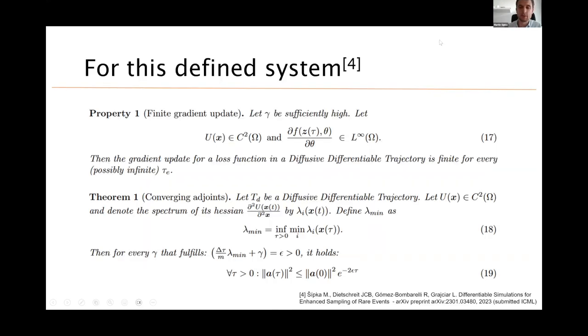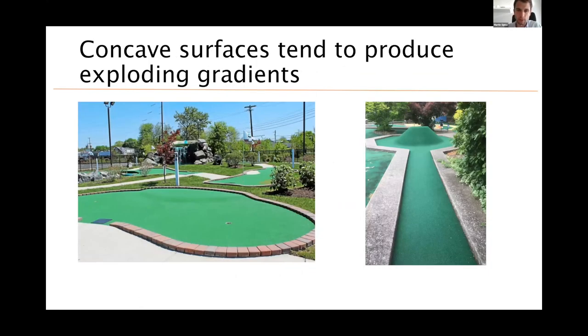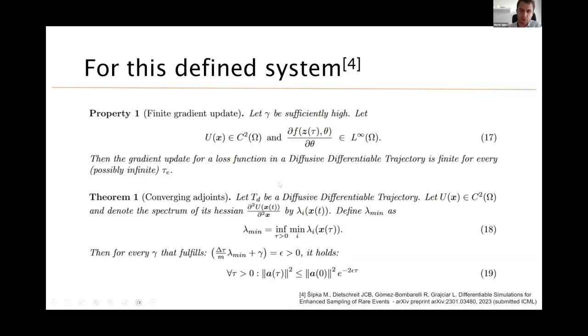So these are some theorems from the paper. I don't want you to read it, please. They take some time to get through, but in short, what we are able to prove is that the gradient update will be finite. The gradients will exponentially decrease back in time if our friction constant in the Langevin thermostat is large enough. And by large enough, we mean that this inequality holds. So it's in some sense up to some constant, depending on the time step, it is actually related to the minimal eigenvalue of the Hessian of the potential and minimal eigenvalue is related exactly to these concave parts of the potential, right? So we're able to prove that for adjoints, this holds. There is one thing I'd like to mention.